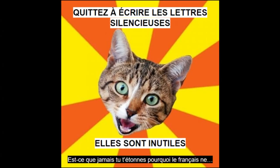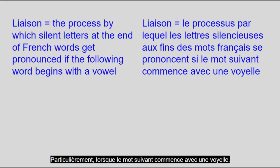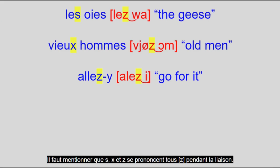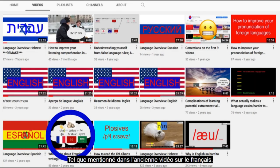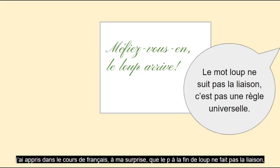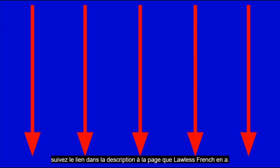Since we're back to silent final consonants, might as well talk about liaisons now. You ever wonder why French doesn't just quit writing the silent consonants? It's because they can still sometimes be pronounced — specifically, when the following word begins with a vowel, most silent letters are actually pronounced, like in les oiseaux or nous allons. S, X, and Z all get pronounced /z/ during liaisons. Unfortunately, not all words with silent final letters make them re-emerge. I learned in French class, to my surprise, that the P at the end of trop doesn't do liaisons, and for those words there's no system. If you're actively learning French and want to know the specifics, follow the link in the description to the page that Lawless French has about this.